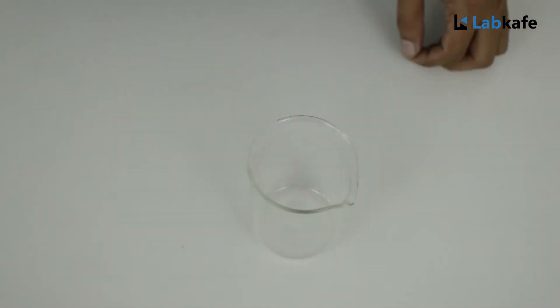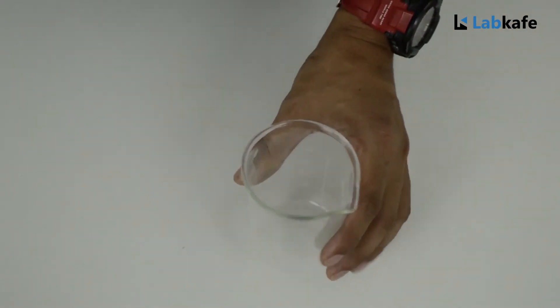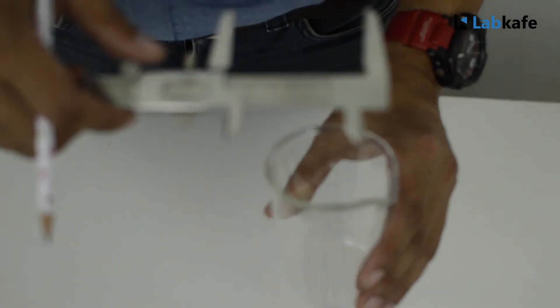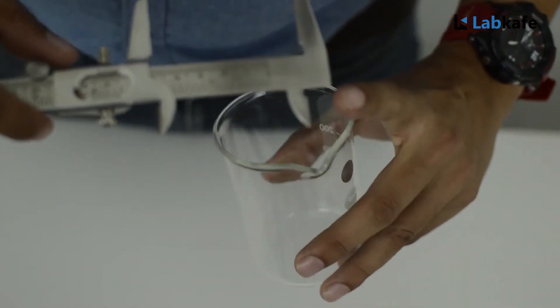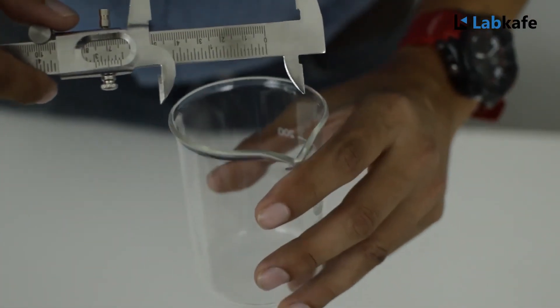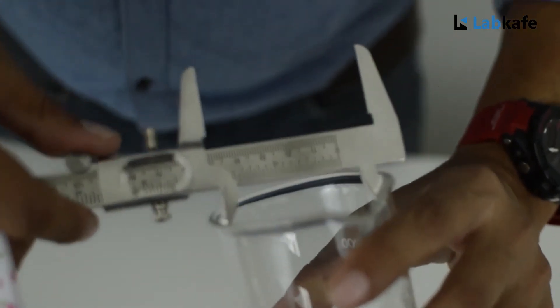Now we will measure the internal diameter of this beaker using this vernier caliper. To do so, we will put these external jaws inside the beaker and check the reading.